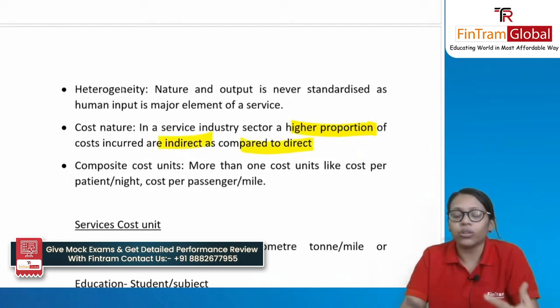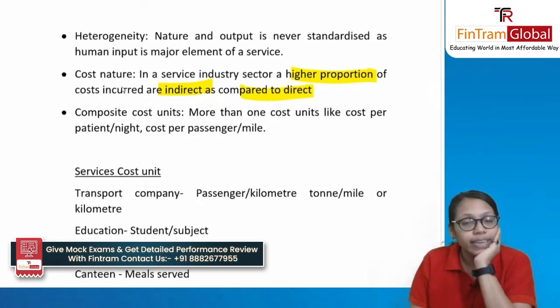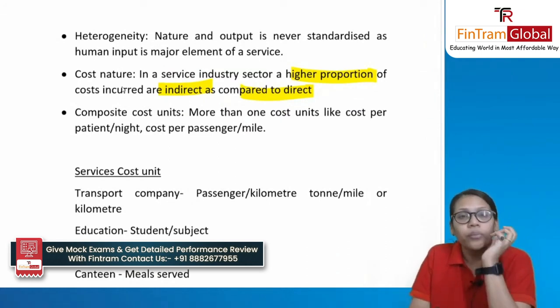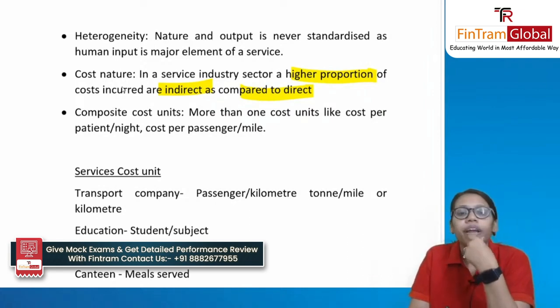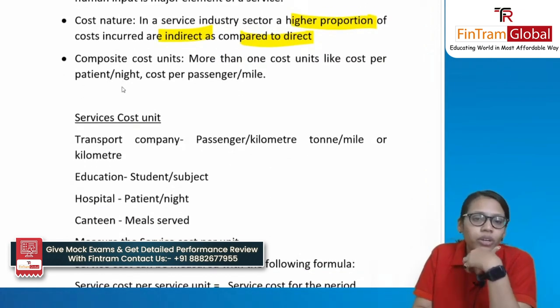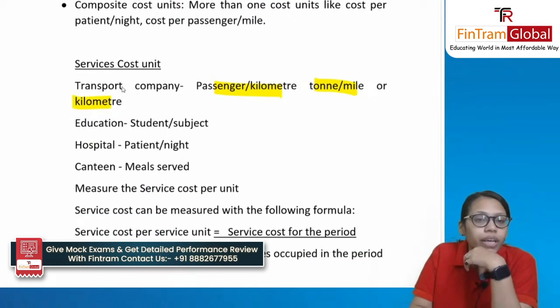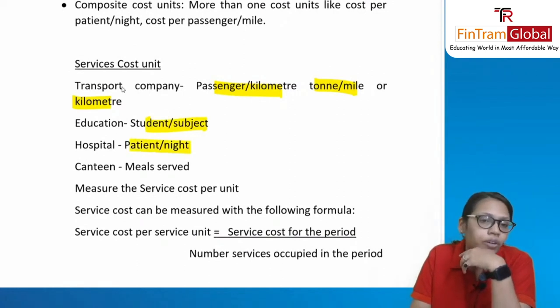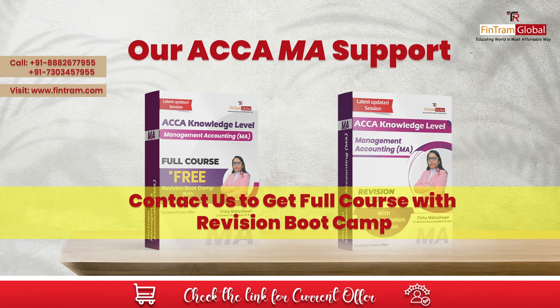Service cost = total cost ÷ number of service units in the period. Examples of service cost units: transport company — passenger per kilometer; education — student per subject; hospital — patient per night; canteen — meals served.